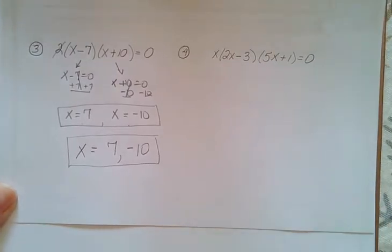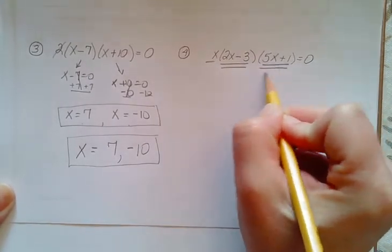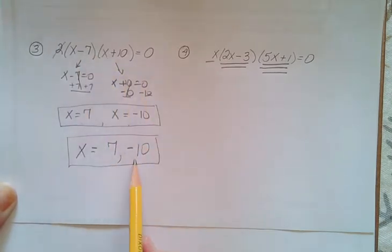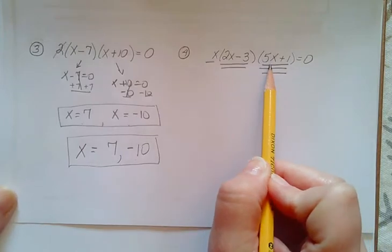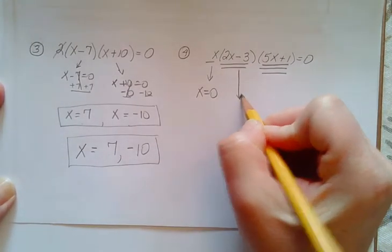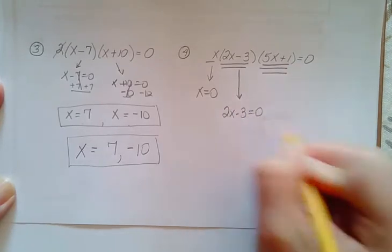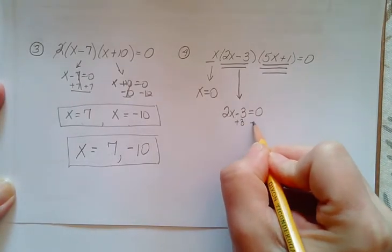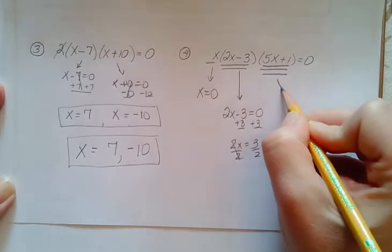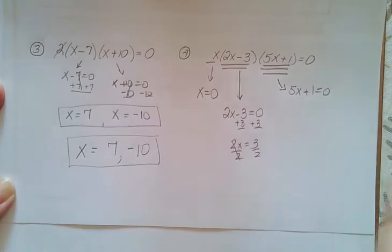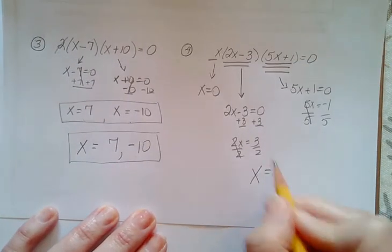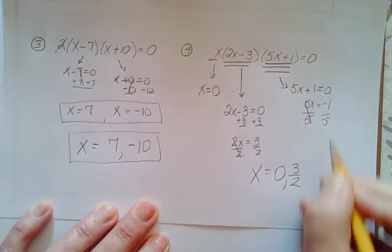Number 4. So this guy over here, oh look. There's 1, 2, 3 different factors. 3 different x's. When we had 2x's, we had 2 answers. Here we have 3x's, so we should get 3 answers. Well, this one here says x equals 0. And this guy here, 2x minus 3 equals 0. This one's a little bit more complicated than all the other equations. Add 3, 2x is equal to 3 divided by 2. 3 halves. This guy over here, 5x plus 1 equals 0. Minus 1 to the other side. Negative 1 divided by 5. So your solutions here for x are 0, 3 halves, and negative 1 fifth.